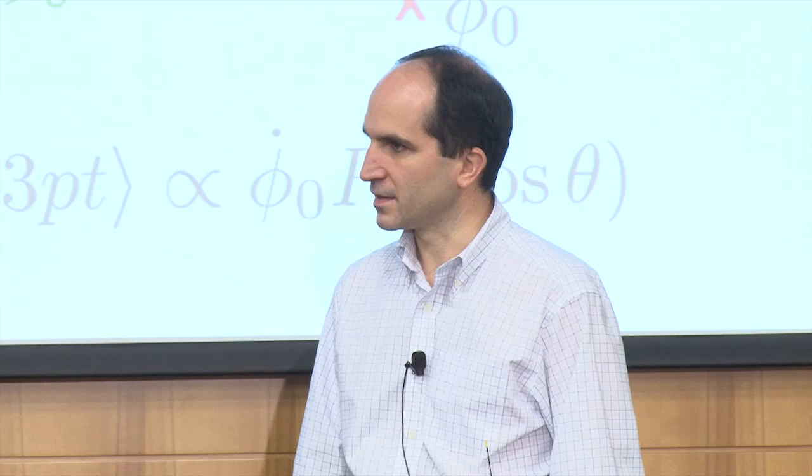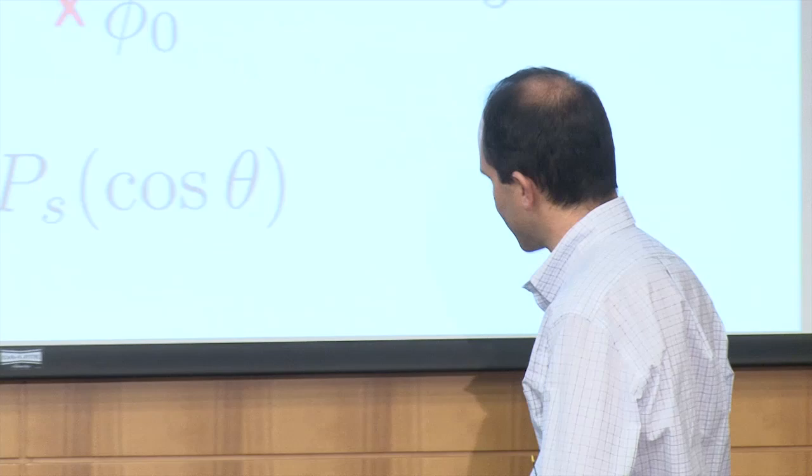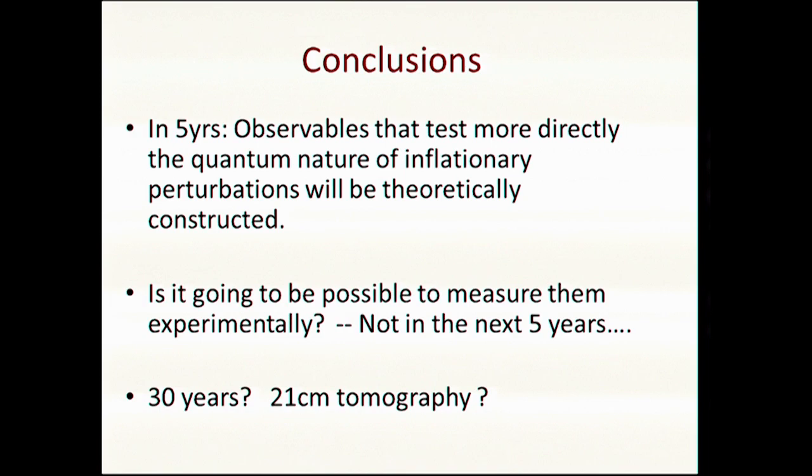Question: Even in a slow roll or Gaussian regime, can you imagine something like this can be done? Answer: I think it all depends on what our experimental colleagues can do. Maybe in 30 years, we have these huge precise maps of 21-centimeter tomography. For some reason, we're extremely lucky and we can see a huge number of modes, and then many of these things will be possible. Theoretically, it's easy to consider these things and it's fun. I think it's interesting to understand even conceptually how you would do this.